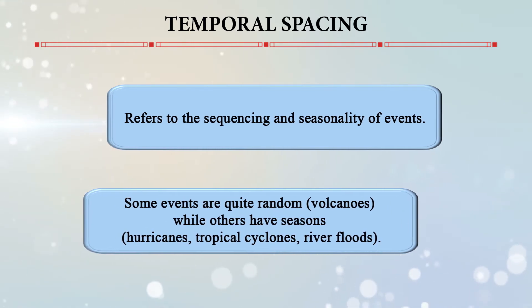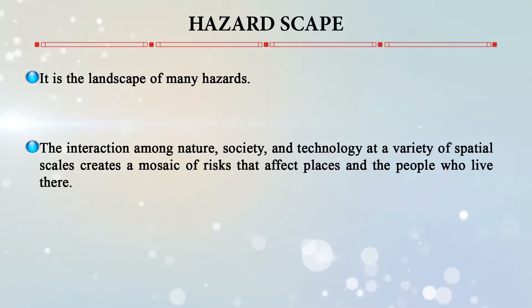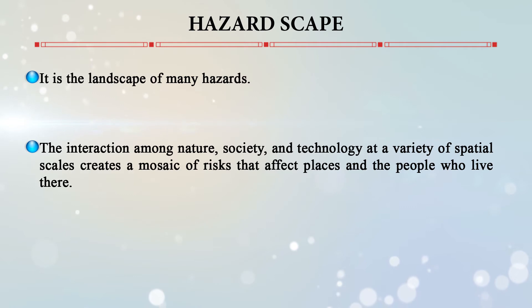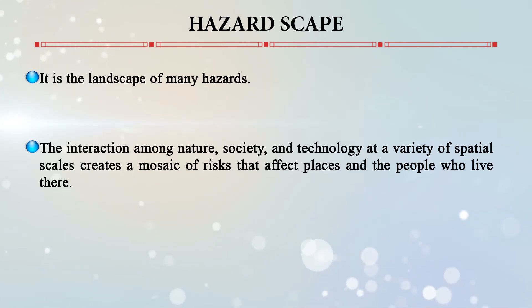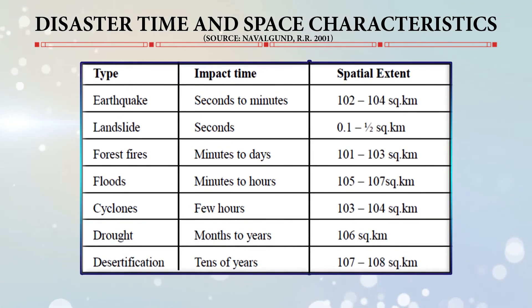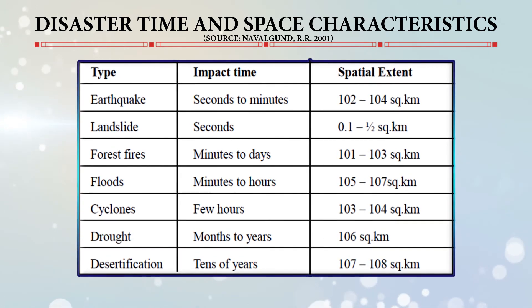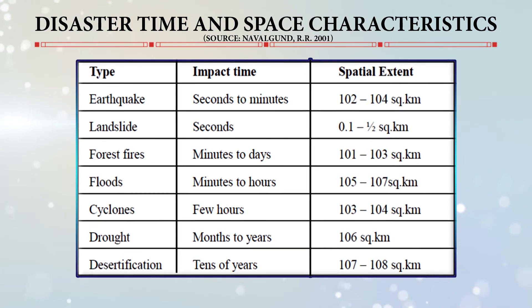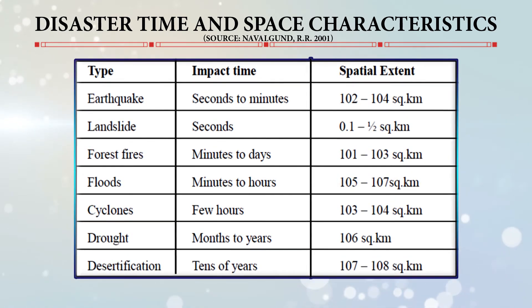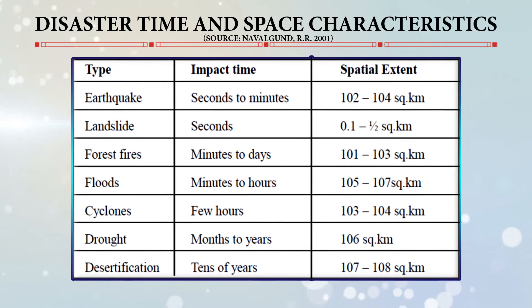A hazardscape is a landscape of many hazards. The interaction among nature, society, and technology at a variety of spatial scales creates a mosaic of risk that affects places and the people who live there. A disaster time-space characteristics table shows, for example, that an earthquake can occur in seconds to minutes with a spatial extent ranging from 10² to 10⁴ square kilometers.